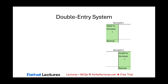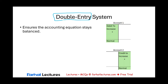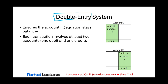The other thing we need to know about T-accounts is that in accounting we have a double entry system. What is a double entry system? Simply put, for the accounting equation to stay in balance, at least two accounts are involved — always. We talked about this when we analyzed transactions. At least two, not only two; you could have three, four, or more. But you cannot have just one account, because if only one account is changing, the accounting equation will not stay in balance.